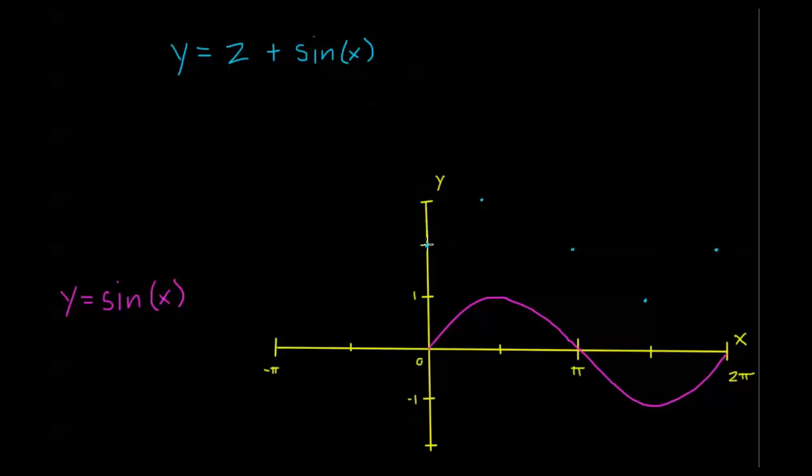So my shifted sine graph, 2 plus sine of x, is going to look a little bit something like this. Nothing too bad. Just remember, whenever we're adding some value outside or separately from the function, we're just moving my y coordinate up or down by that total value. So nothing too surprising here.